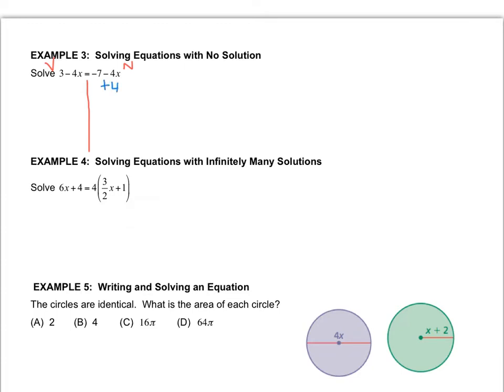I line it up over here with its like term, and it actually also cancels here because negative 4x plus 4x cancels everything. Anything plus its opposite is going to be just zero. When you bring down what's left, you end up with 3 equals negative 7, and then you pause for a second and say wait a second, that doesn't make sense.